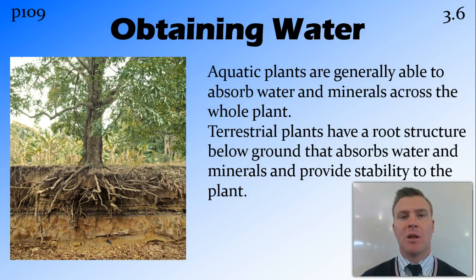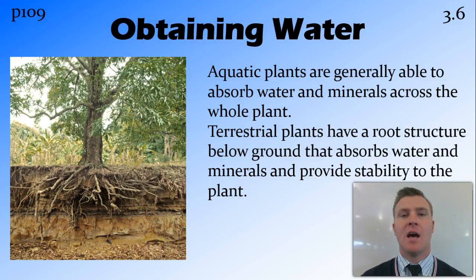Terrestrial plants have a root structure below ground, and the main function of this root structure is: one, to obtain water from the surroundings, and two, to provide stability for the plant.